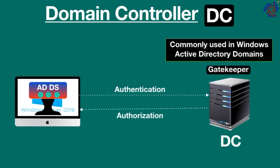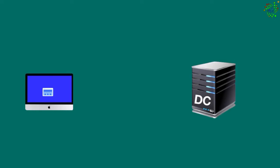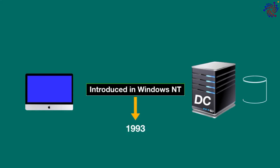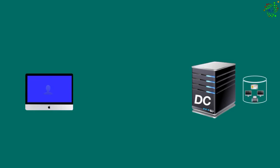Domain controllers are essential for Windows server domains and were originally introduced in Windows NT in 1993. Basically, a domain controller acts like a brain that stores information about user accounts and devices in a centralized database. The primary responsibility of a domain controller is to authenticate and validate user access on the network.